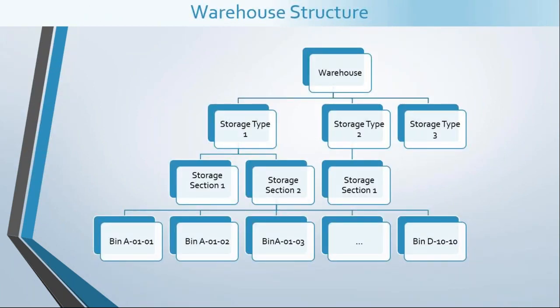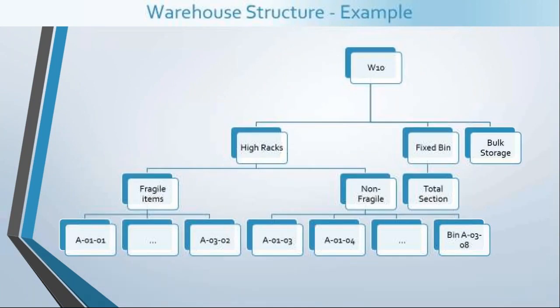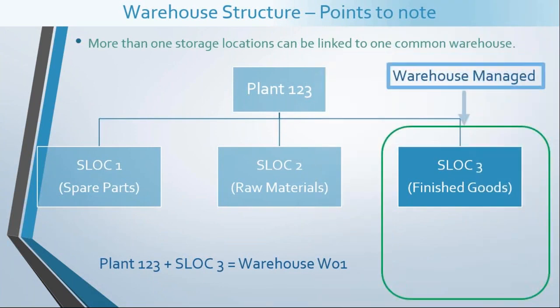Coming back to our sample warehouse structure: at the top we have a warehouse, which has three storage types — high rack, fixed bins, and bulk storage. Within high rack there are two sections: fragile items and non-fragile items. Since at least one section is mandatory per storage type, fixed bin and bulk storage each have one section called 'total section'. Finally, under these sections we create storage bins with meaningful names following a structured template so we can locate them when needed.